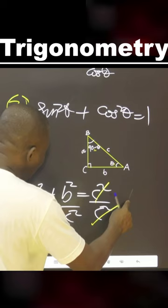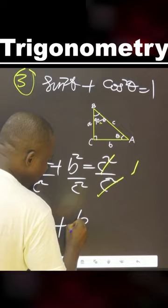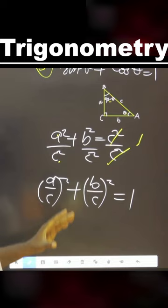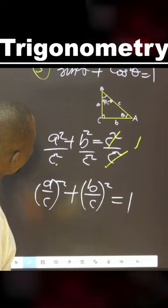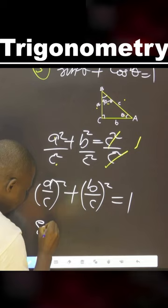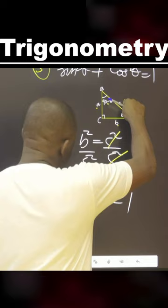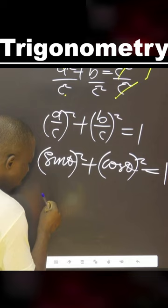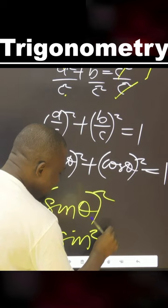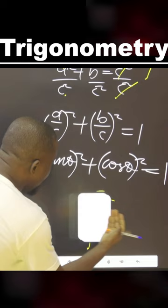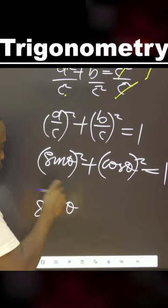Let's divide throughout by C squared, because we want to prove this identity. Dividing gives A over C squared plus B over C squared equals 1. Now let's investigate the meaning of A over C. A over C in respect of this angle is sine theta. B over C is cosine theta. Therefore, sine squared theta plus cos squared theta equals 1.